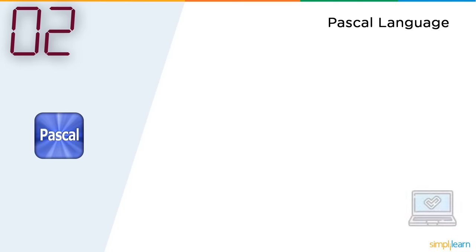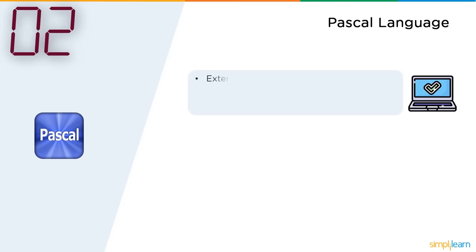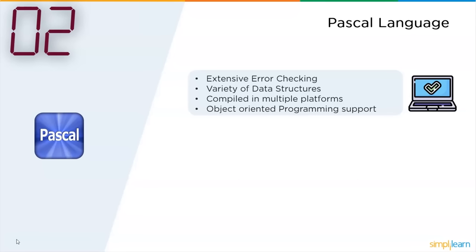The advantages Pascal had: it had very good extensive error checking capability, a variety of data structures, compiled on multiple platforms, and it had object-oriented programming support. Now let's look into the drawbacks that made it an obsolete programming language.